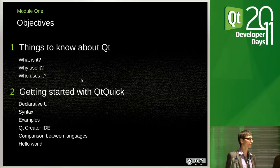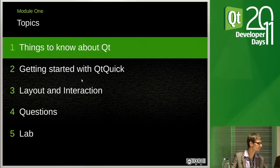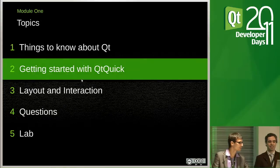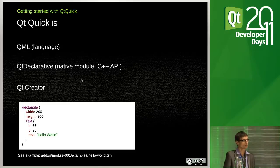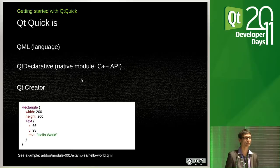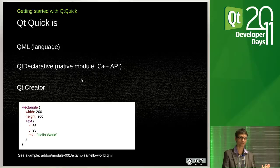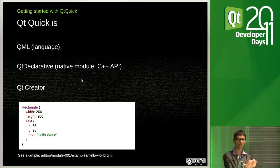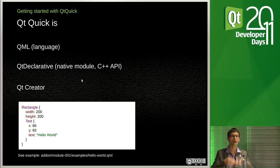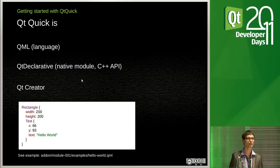What is Qt Quick? Qt Quick is a set of technologies. Under this name you have three different things. First, QML — a new declarative language, as opposed to an imperative language, used to describe your interface. A declarative language is one where you write what you want to see on the screen, contrary to an imperative language where you write how you want things to be done. It's also an interpreted language, so you don't have to compile it.